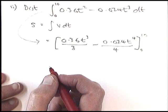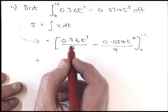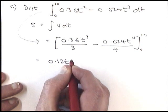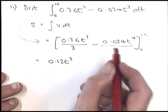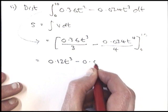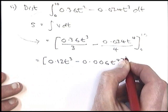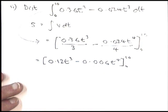I can simplify this a bit if I want to at this point. 0.36 divided by 3 is 0.12. And 0.024 divided by 4 is 0.006. So I can cancel it down to make it simpler.